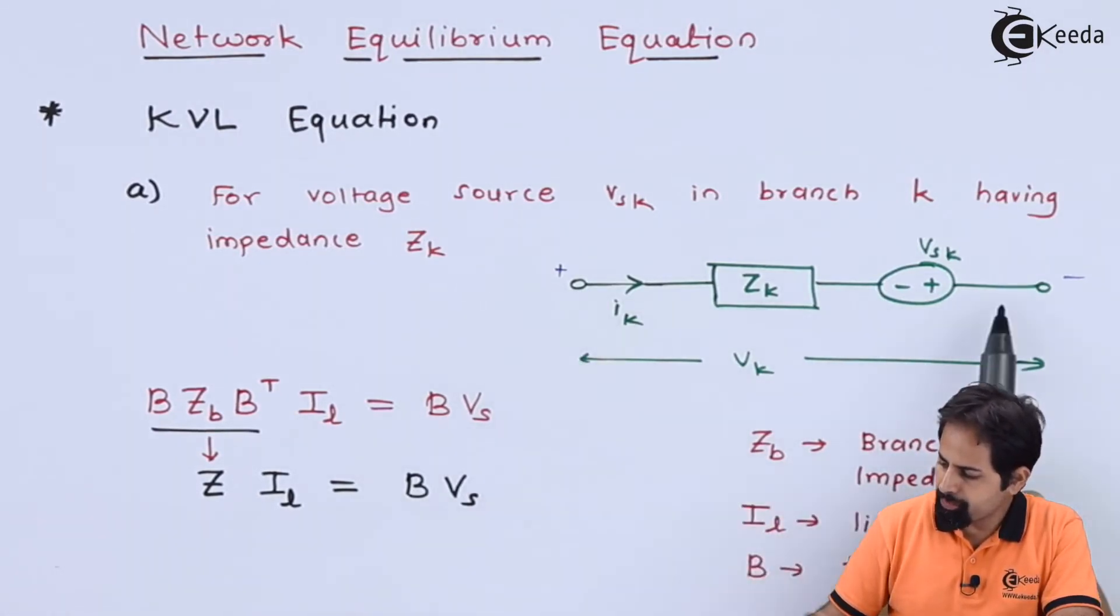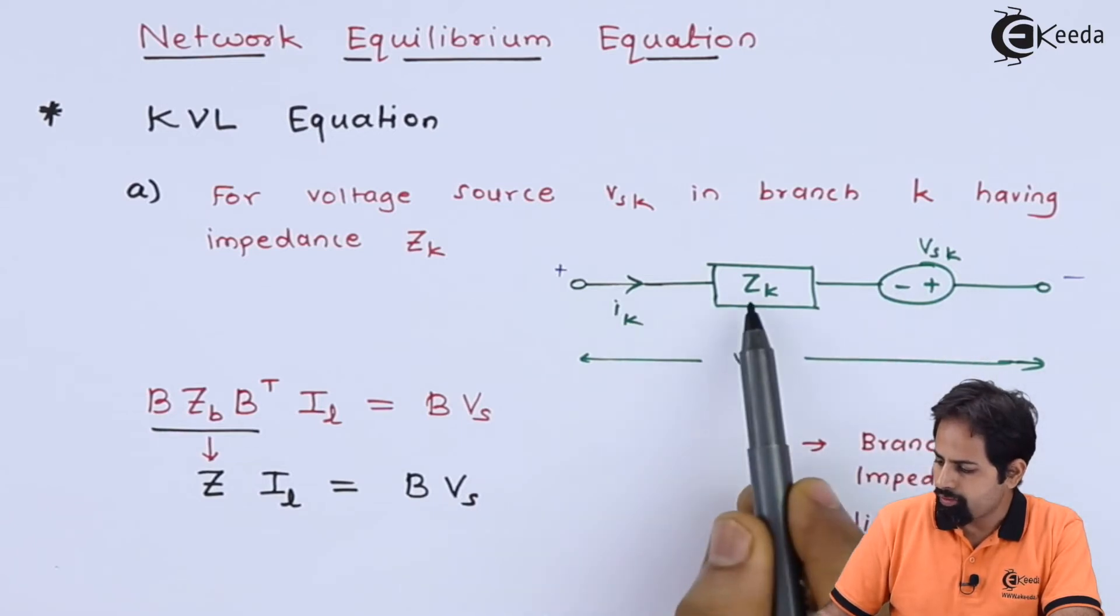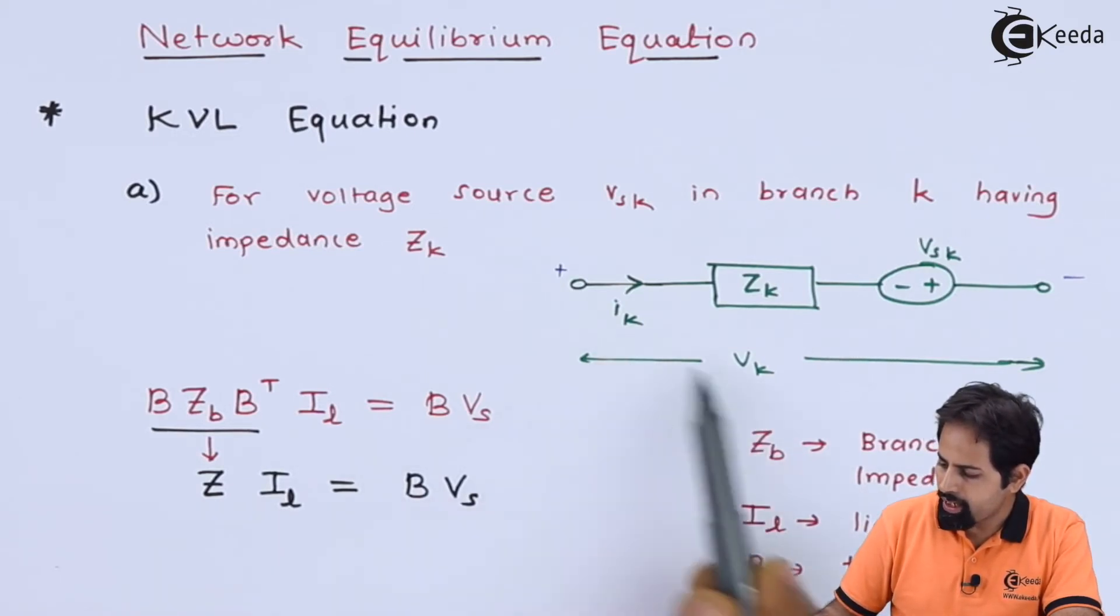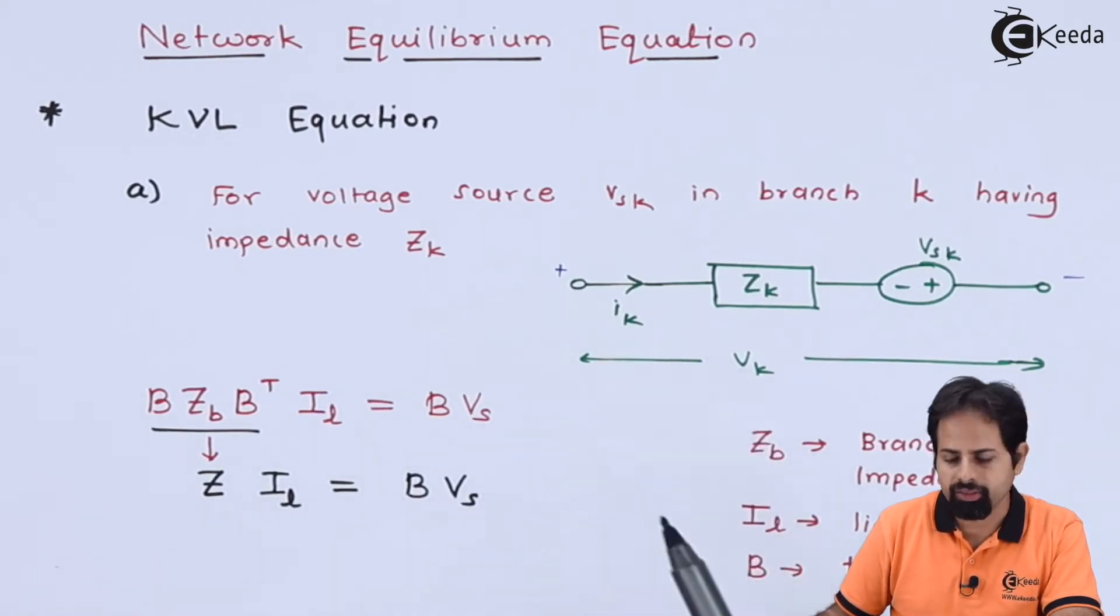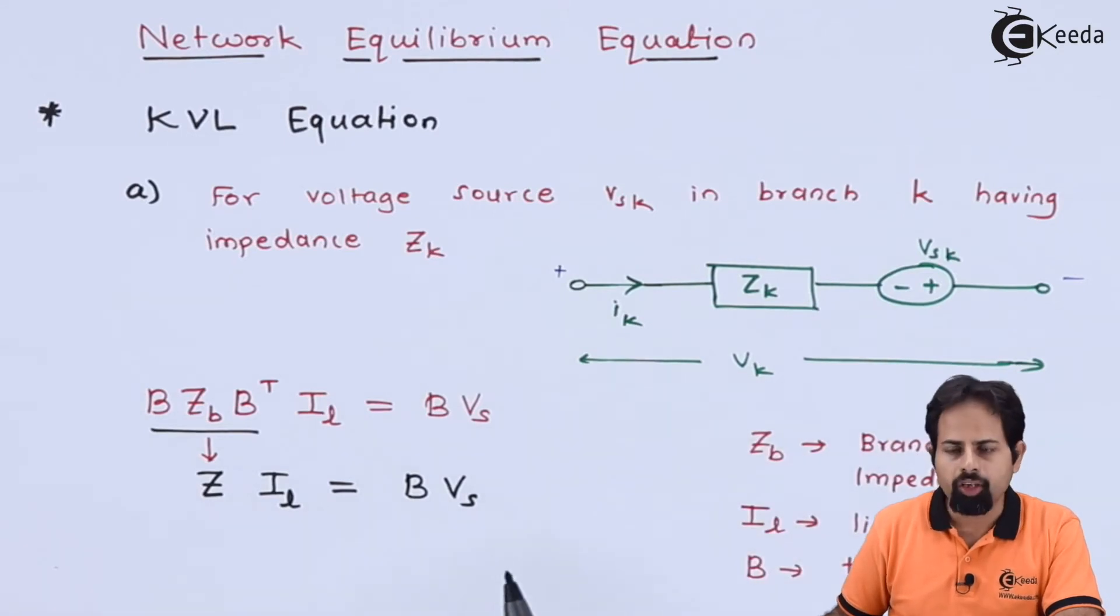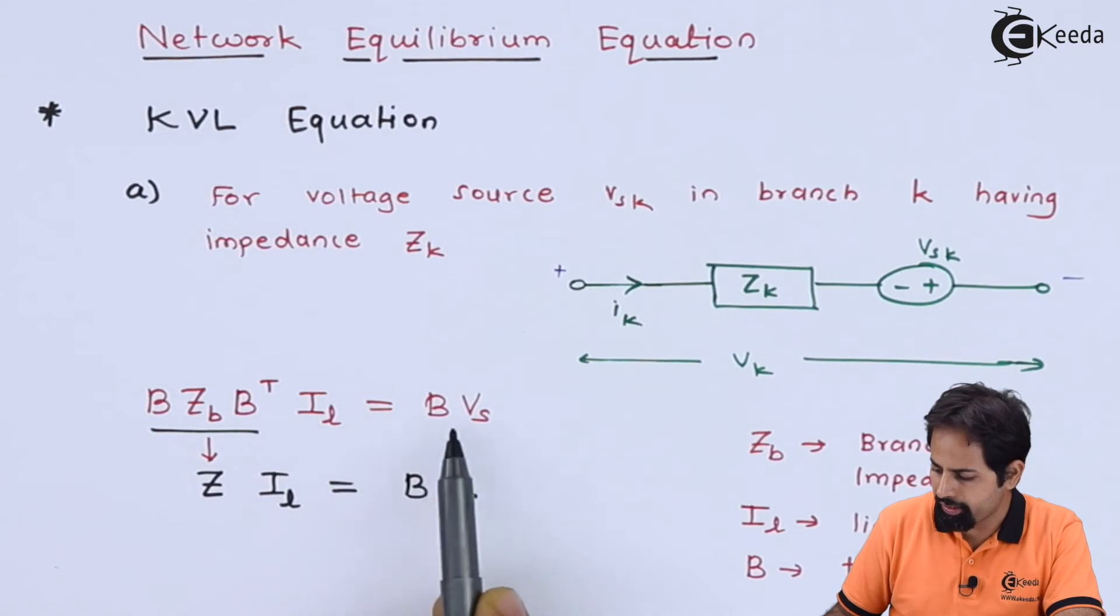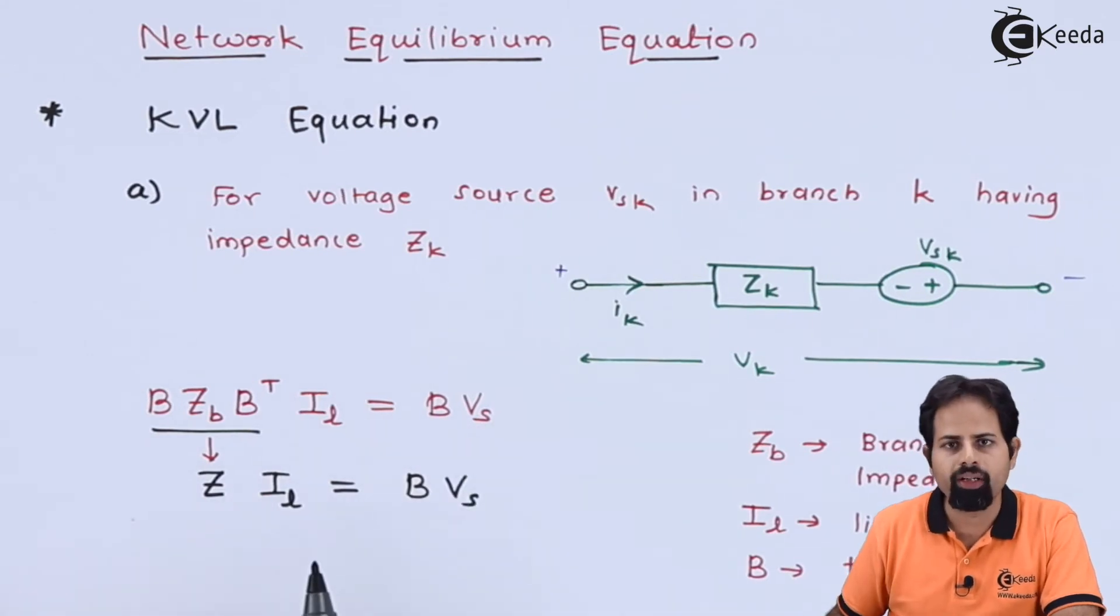You can see a very simple circuit or a branch where impedance is ZK and voltage is VSK. It's a source voltage. VK and IK are branch current and branch voltages. For this structure we have to prove that B ZB B^T IL = B VS. Now you will wonder what these terminologies are.